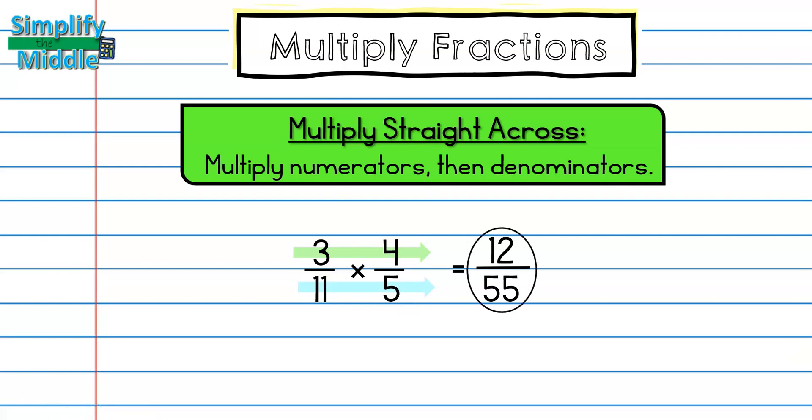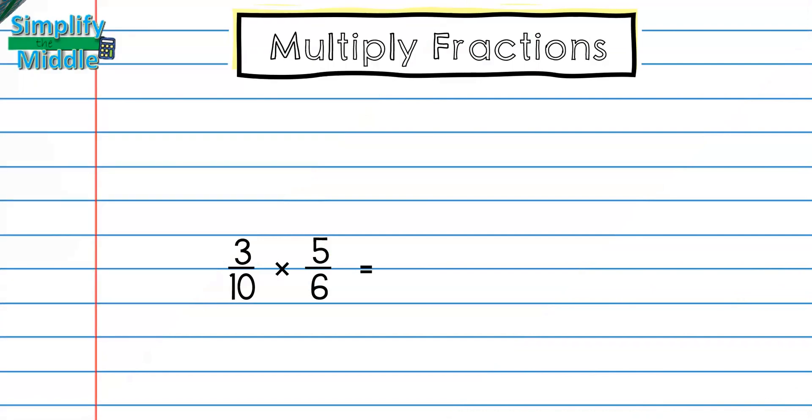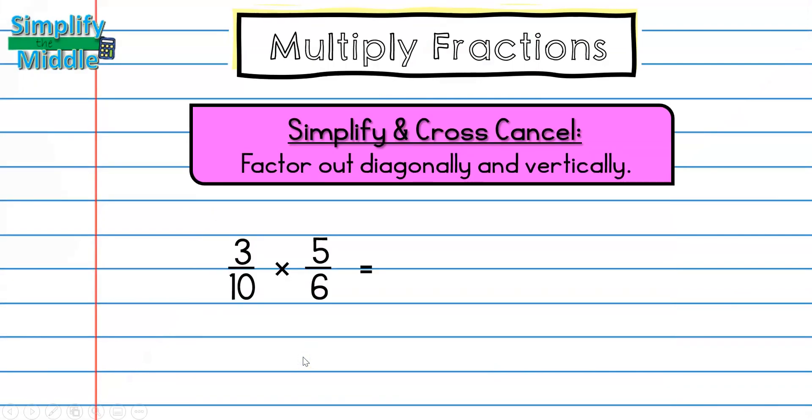What happens when I have a common factor between my numerator and my denominator and I need to simplify? For that we're gonna look at this as an example. I have three tenths times five sixths. I'm going to be simplifying by cross-canceling here and I'll show you the advantage of cross-canceling versus just multiplying straight across and then trying to simplify.